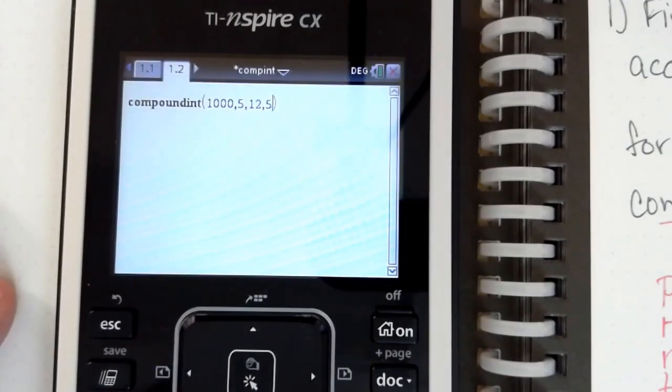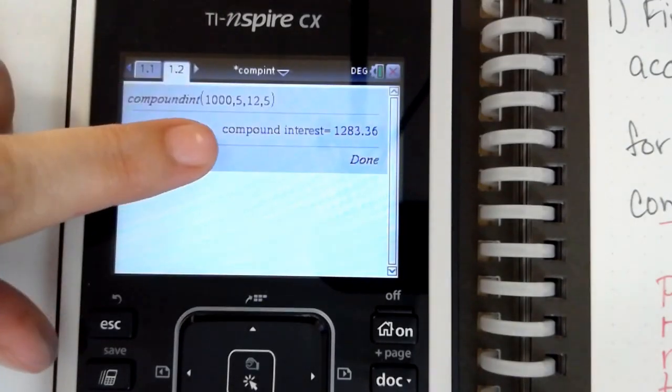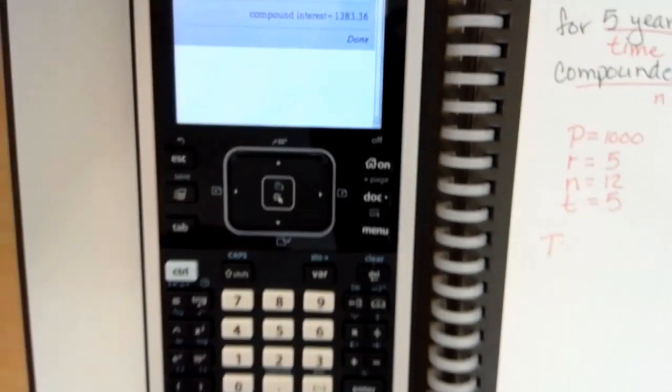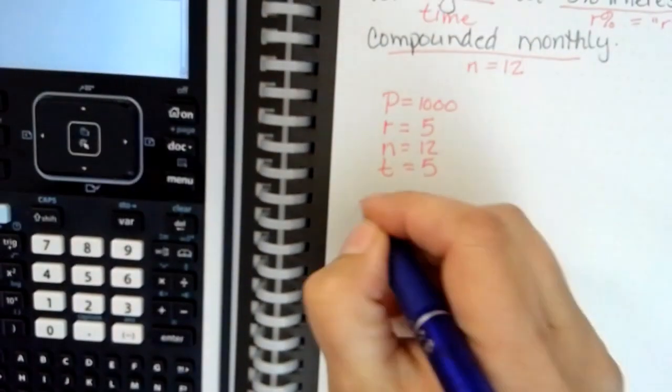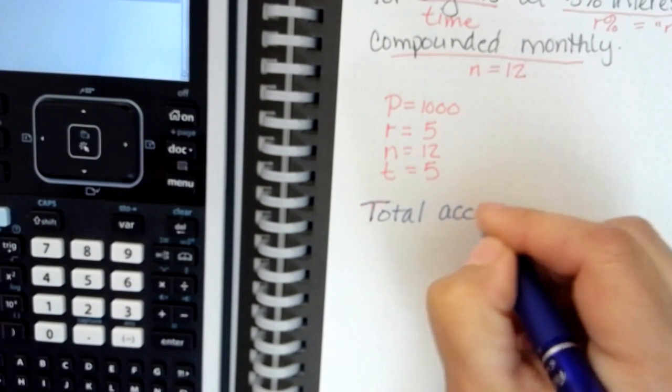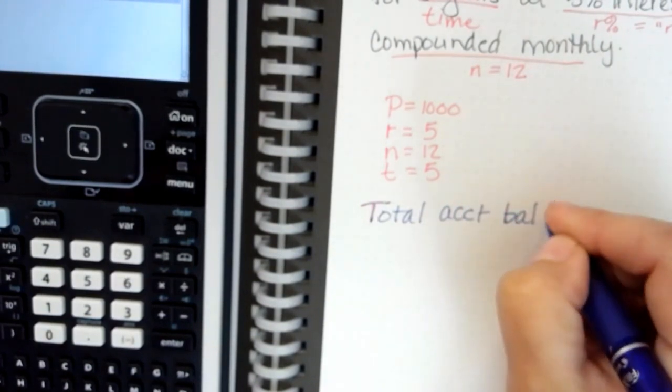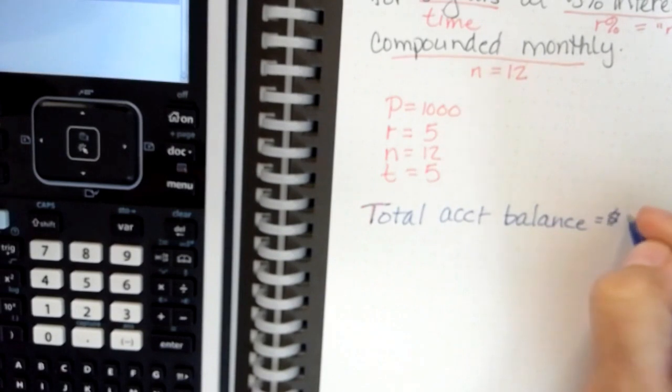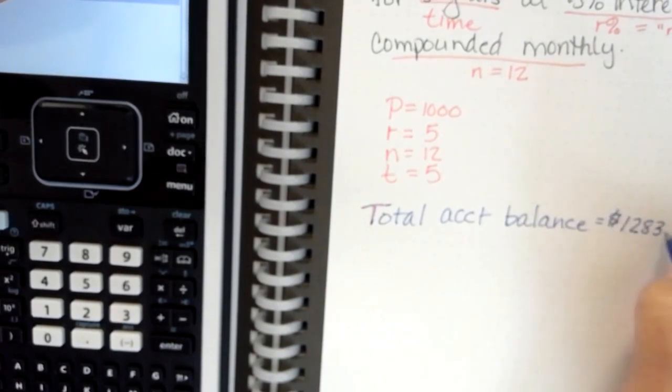Then enter and it shows us our compound interest is one thousand two hundred eighty three dollars and thirty six cents. So total account balance at the end of five years is one thousand two hundred eighty three dollars and thirty six cents.